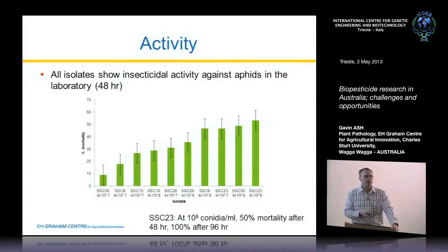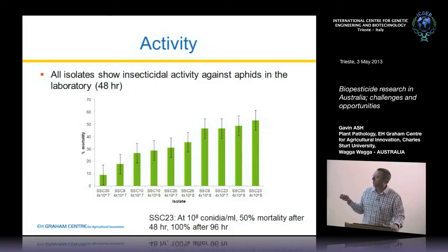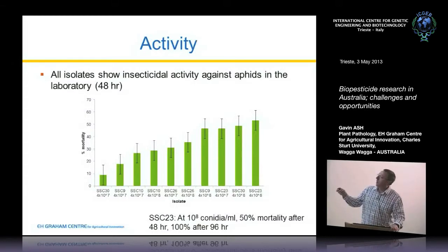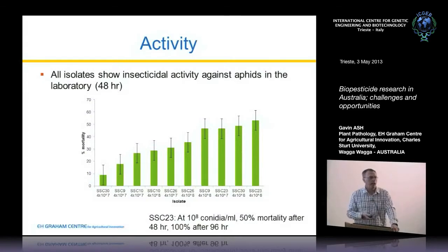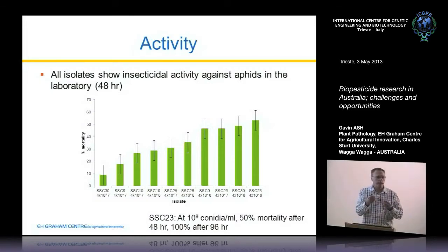When we look at activity of these isolates — just some data to show they will actually kill — you get a whole range. These are single spore isolates at different concentrations: mortality at 48 hours, 100% death after 96 hours. So these things are very efficient at killing the insect. They'll kill the insect and then sporulate on the surface, so they become another little mini-factory within the field once we've killed them.